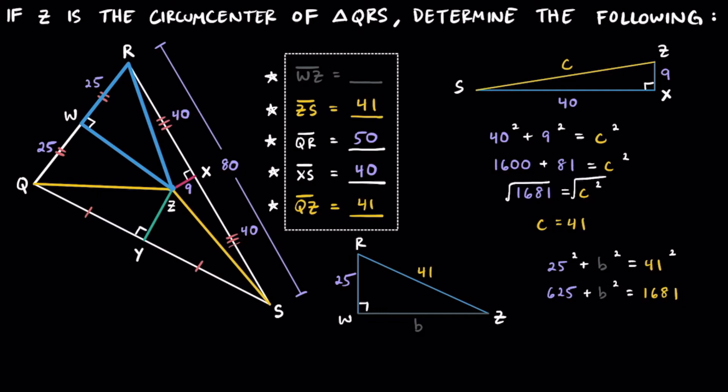And if we go ahead and subtract 625 from both sides, we're going to be isolating this B, so we have B squared is equal to, and let's see, 1681 minus the 625, that's going to equal 1056. And then finally, we go ahead and take the square root of both sides.